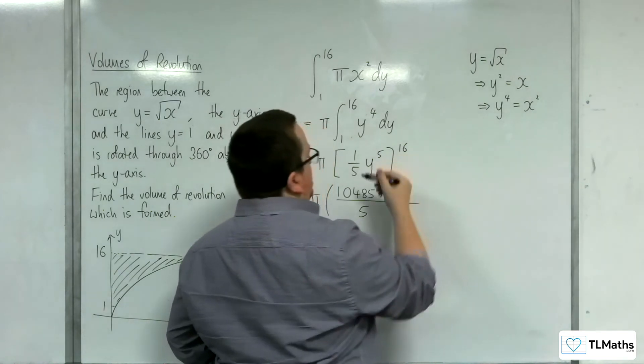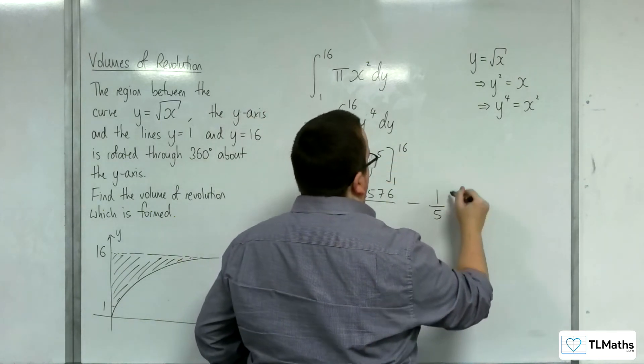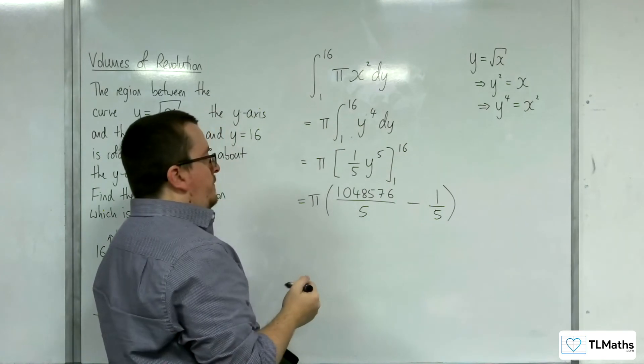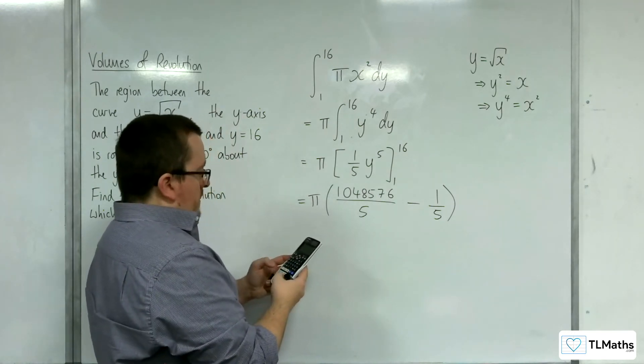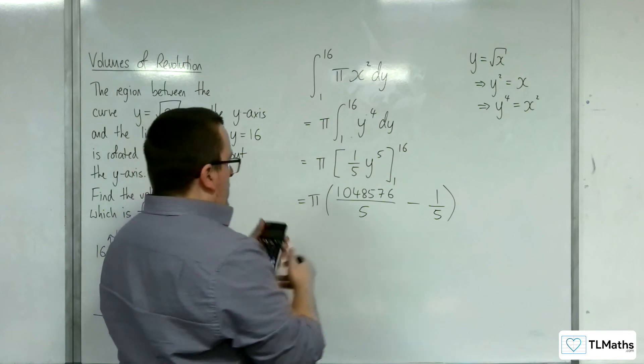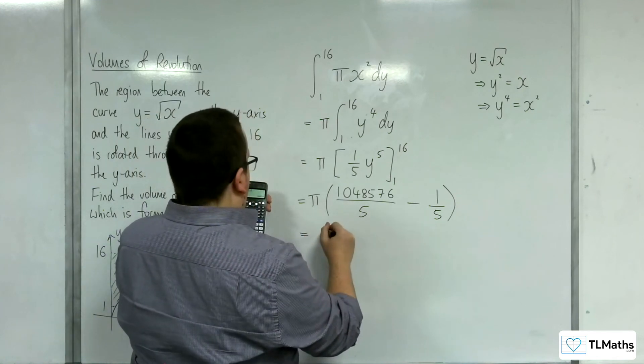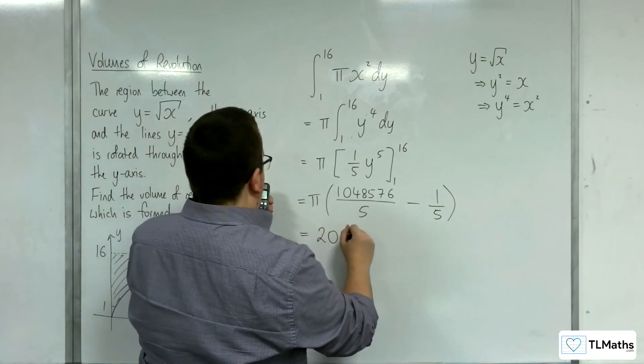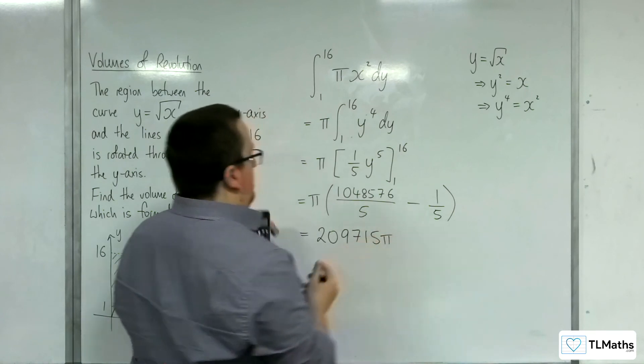And then we're taking away, substituting the 1, 1 fifth. Okay, so, take away 1 fifth, and we get 209,715 pi.